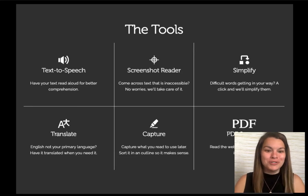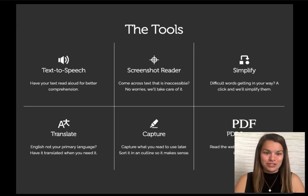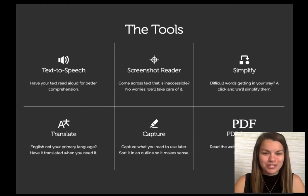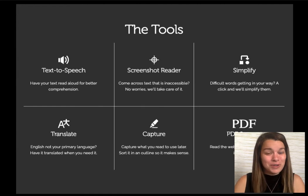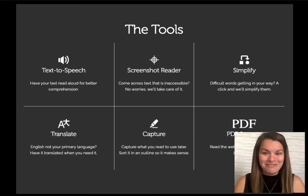Let's first talk about the tools. First, there's text-to-speech — have any text be read aloud for better comprehension. There's a screenshot reader: if you have a picture or a screenshot where the text is inaccessible, Snap and Read will take care of it.